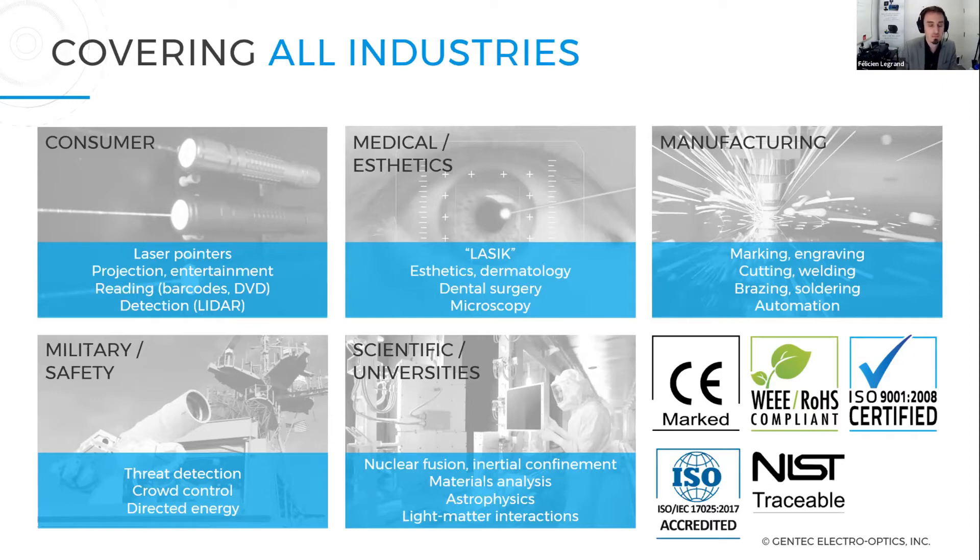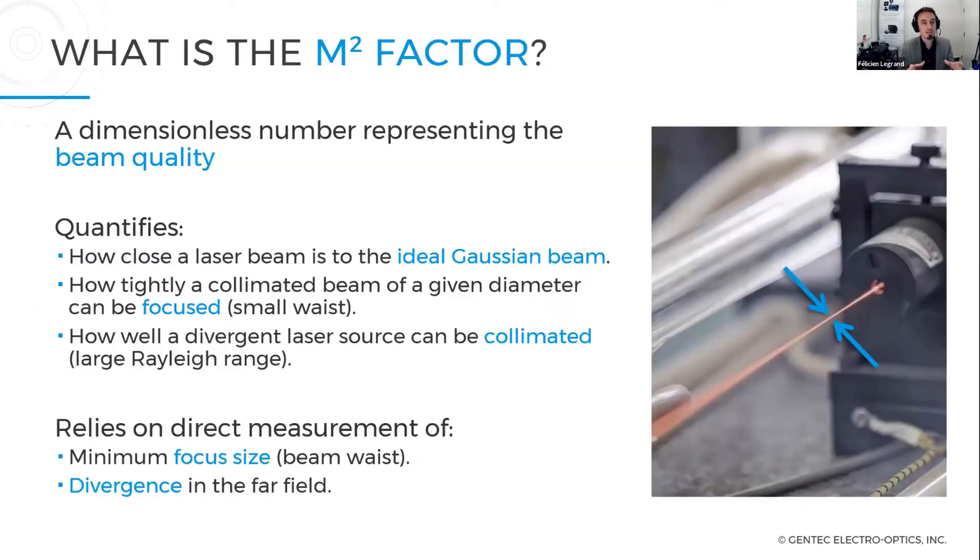What is this M² factor? It is a dimensionless number that represents the beam quality. We'll see in the next slide what kind of equation derives this number and how we get to this number. It quantifies three things: first, how close my laser beam is to an ideal Gaussian beam, then how tightly a collimated laser beam of a given diameter can be focused to get the smallest beam waist as possible.